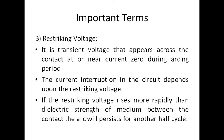To understand properly, restriking voltage is the transient voltage that appears across the contacts at or near current zero during the arcing period. The current interruption in the circuit depends upon the restriking voltage. If the restriking voltage rises more rapidly than the dielectric strength of the medium between the contacts, the arc will persist for another half cycle. In the next half cycle, the arc occurs again — this is called the restriking concept, and the voltage that appears across the line is called the restriking voltage.